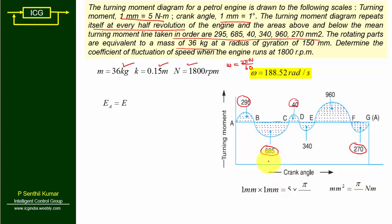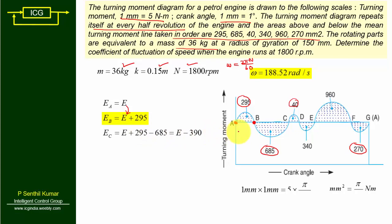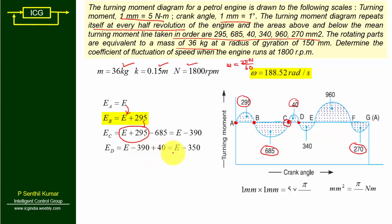Finding energy at each point: energy at A = E. Energy at B = E + 295 (area above mean). Energy at C = E + 295 − 685 = E − 390 (area below mean). Energy at D = E − 390 + 40 = E − 350 (area above mean).